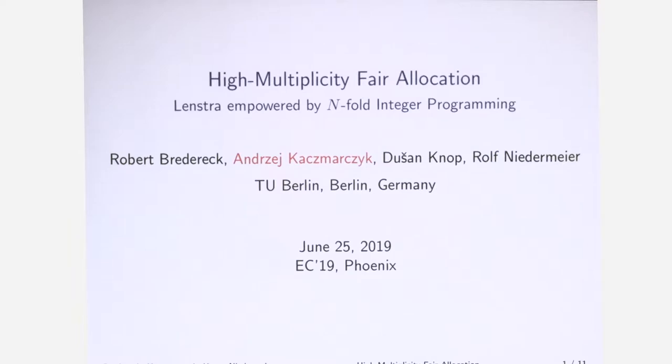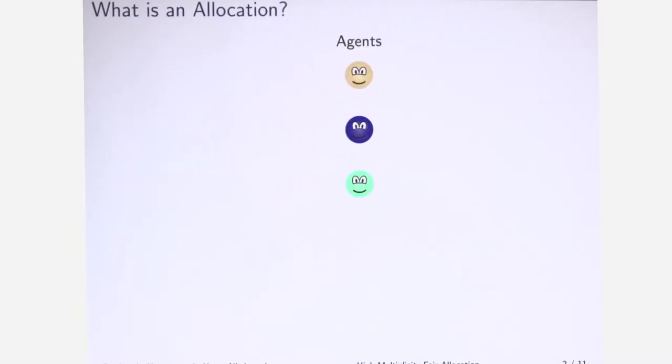Since it's quite early now, let's start with a quick recap of what an allocation is. We've got some agents, we've got some items. The types of items may not be so large, there are three of them, but they might come in many pieces, in many numbers. One item might have high multiplicity of occurrences, and this is where the part of high multiplicity comes from.